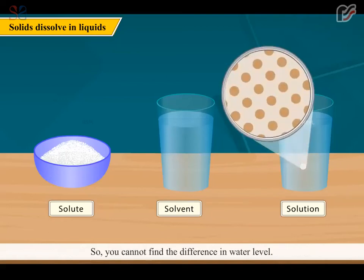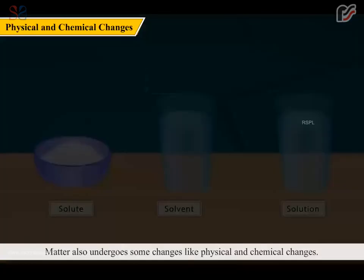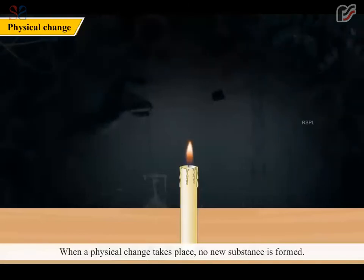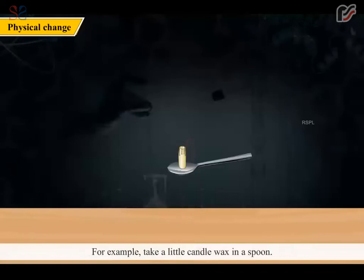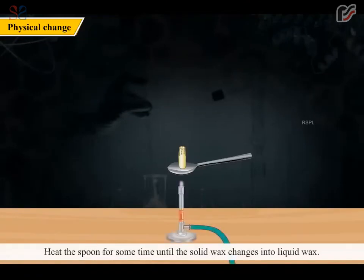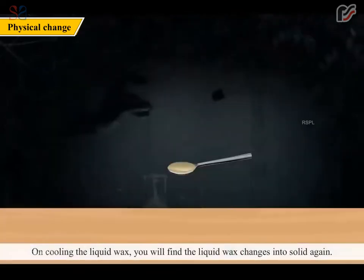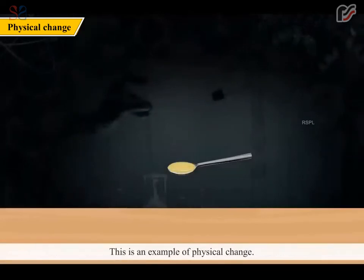Water also undergoes some changes like physical and chemical changes. When a physical change takes place, no new substance is formed. But there may be a change in the size, shape or state of the substance. For example, take a little candle wax in a spoon. Heat the spoon for some time until the solid wax changes into liquid wax. On cooling the liquid wax, you will find the liquid wax changes into solid again. This is an example of physical change.